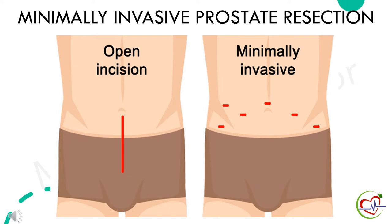Now let's move on to the surgical management of benign prostatic hyperplasia. The first one is minimally invasive prostate resection, which is a surgery to remove a part of the prostate gland to treat an enlarged prostate. This surgery will improve the flow of urine through the urethra.